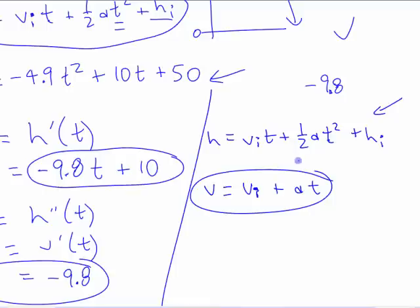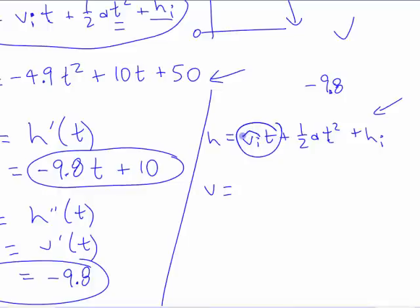If you wanted to find the derivative of this... let's pretend we didn't know that. What's the derivative of this? It's a constant times time. The derivative of 3x is 3. The derivative of 3t with respect to t is 3. So the derivative of v_i times t is v_i.